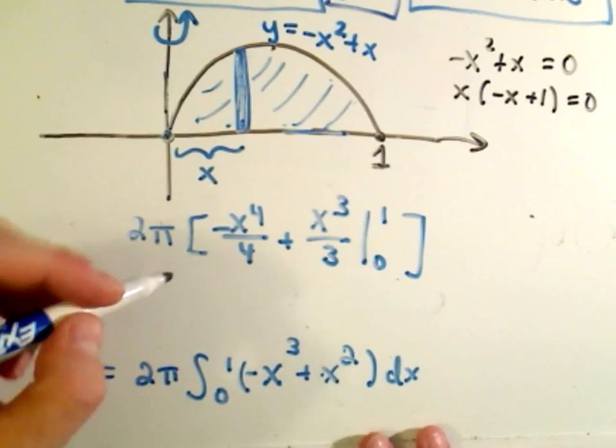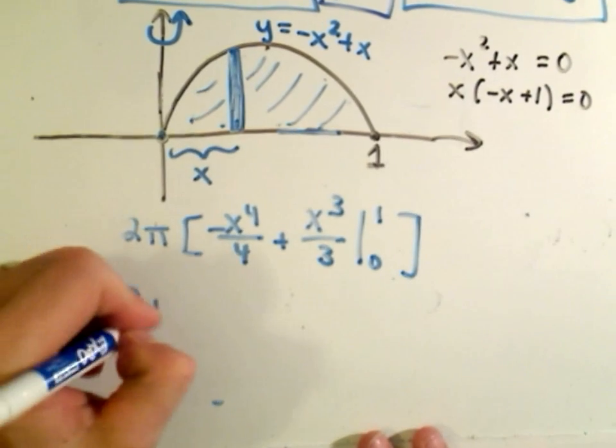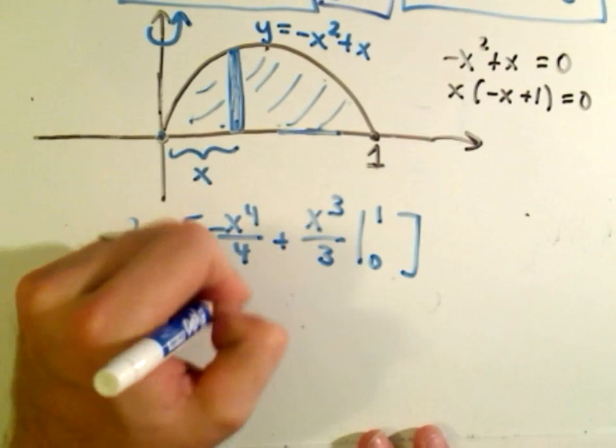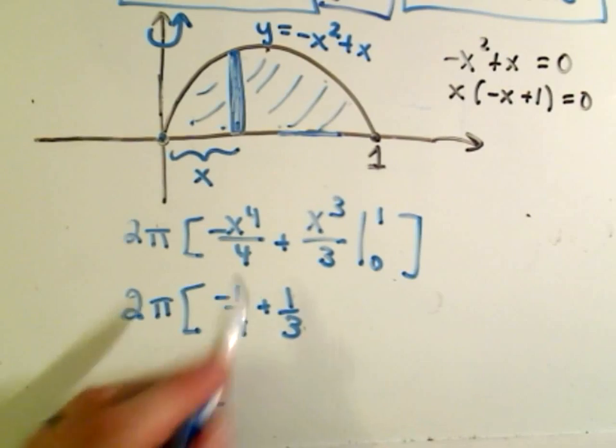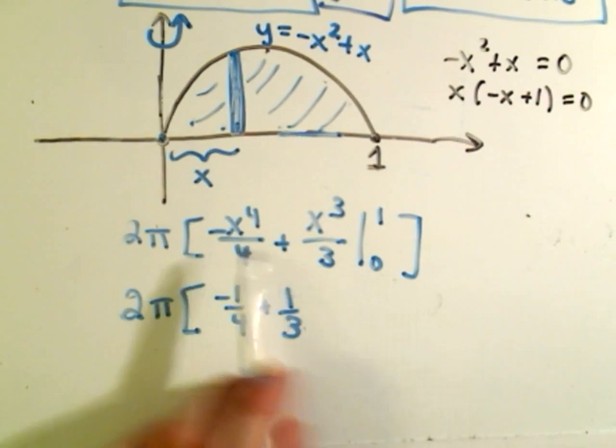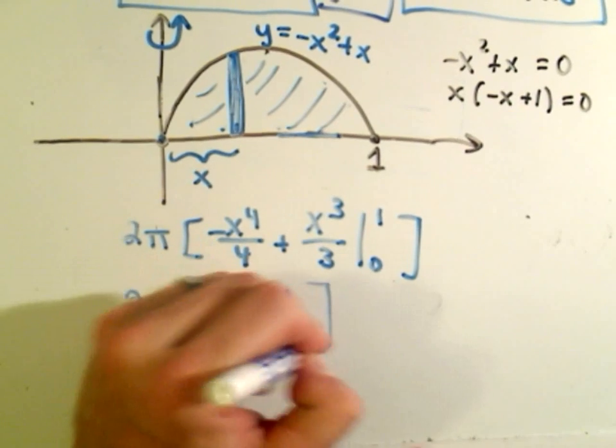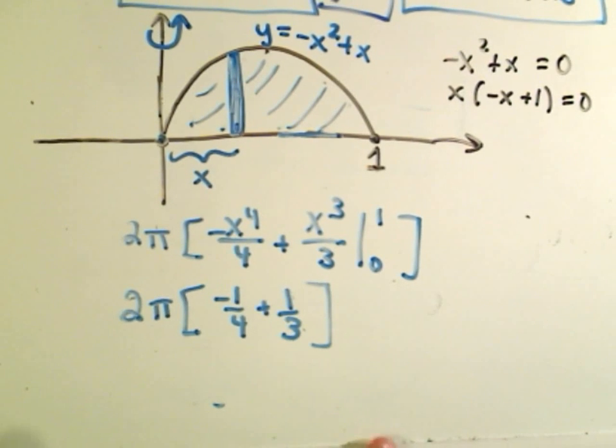When you plug these values in, you'll simply get 2 pi, you'll get negative 1 4th, plus 1 3rd. When we plug in the 1, when we plug in the 0, we'll get 0 plus 0. So that'll be our value.